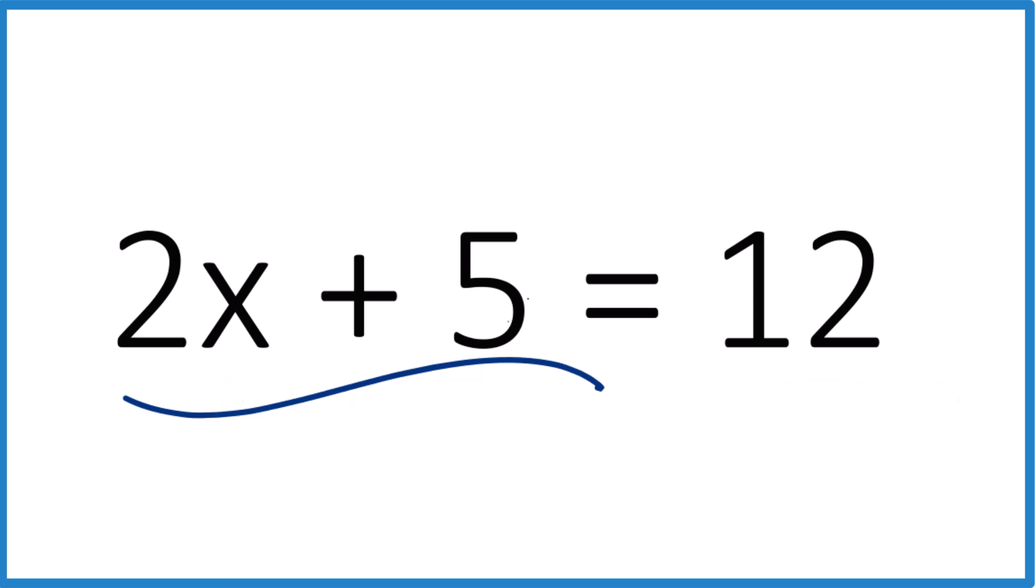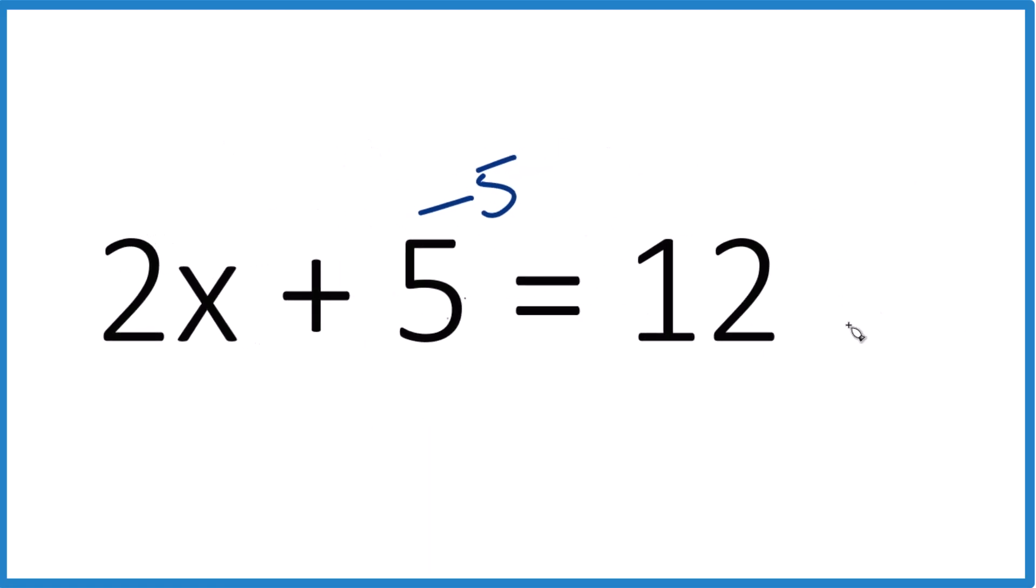So why don't we start? We want to get x all by itself, subtracting 5 from both sides. So since I subtract 5 from this side, remember, this is algebra, so you got to do it to both sides. If we do it here, we got to do it here.